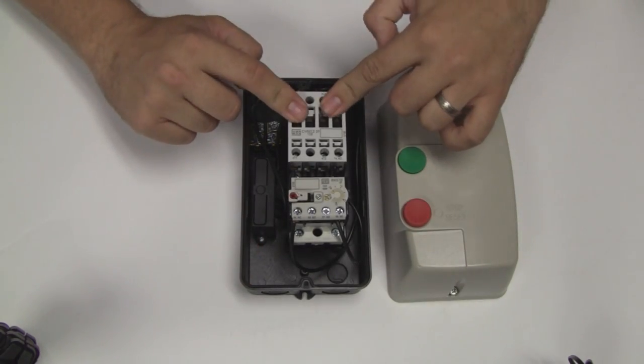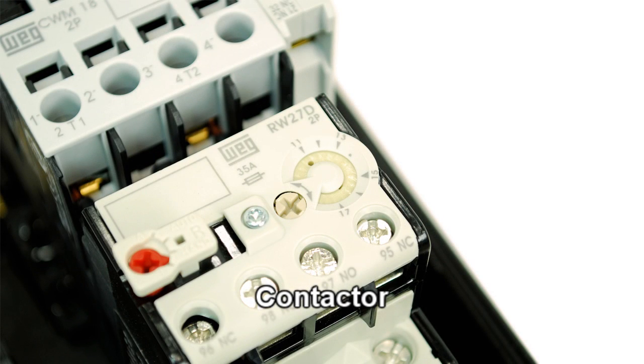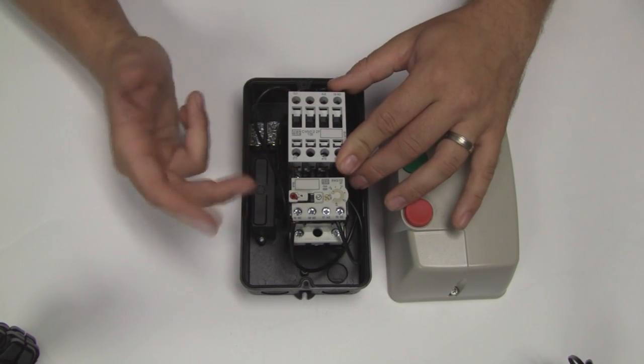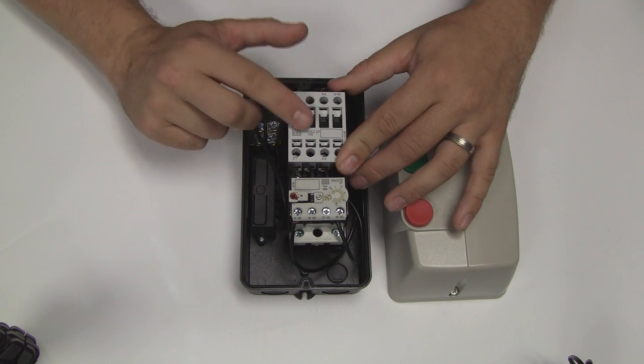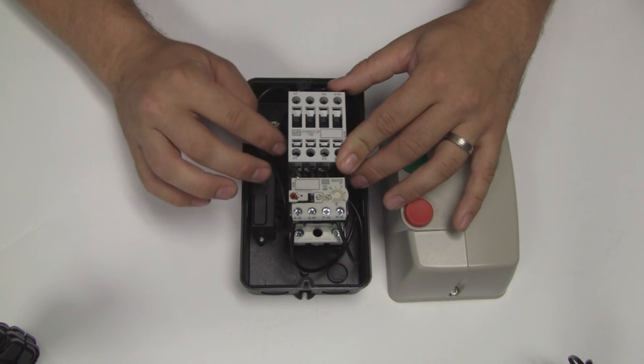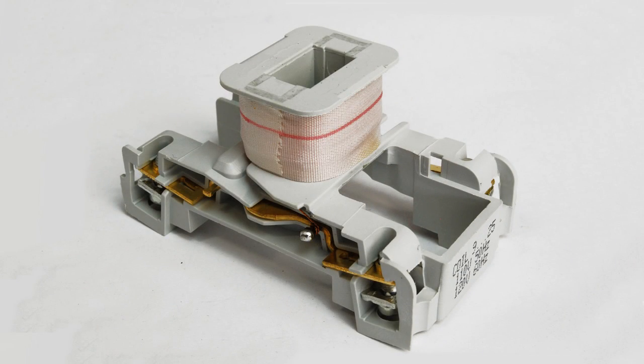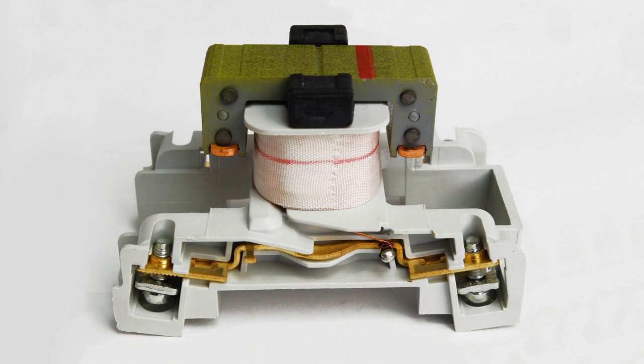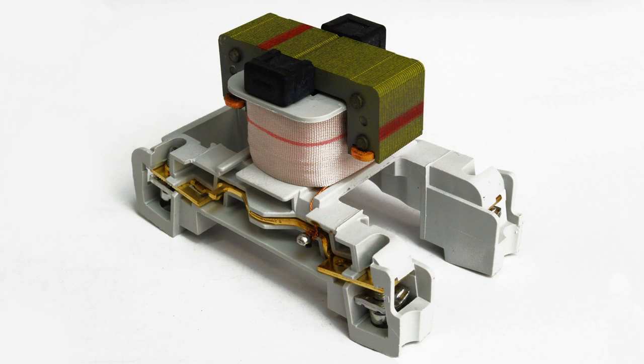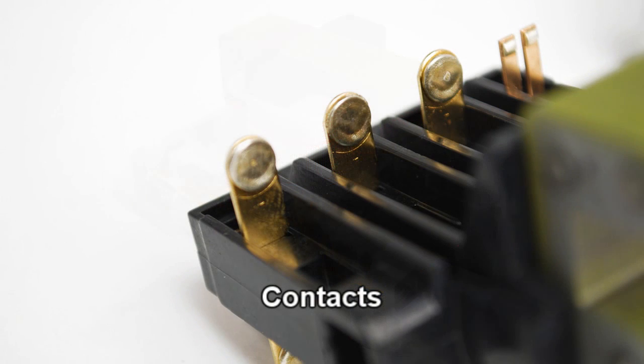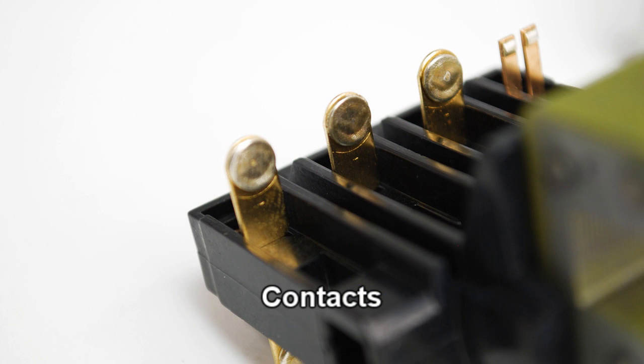On top here we have what's called a contactor. A contactor is a specially designed relay that is designed to switch higher currents. A relay is an electromechanical device that on the bottom has a coil of wire. You can feed that a fairly low current signal, but it generates a magnetic field that pulls down on the contacts in the top of this unit. These contacts have pads on them that are rated to switch high amperages.